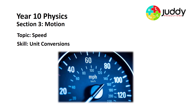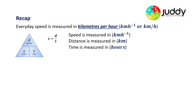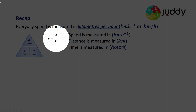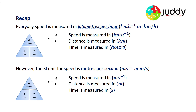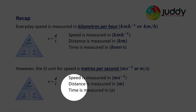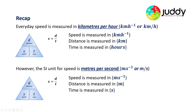Today's video focuses on physics with the unit conversion of speeds. A quick recap — most students should be used to the triangle approach, which identifies that speed equals distance over time. Traditionally, everyday usage has speed measured in kilometres per hour, with distance in kilometres and time in hours. However, the International Standard SI unit for speed, used in the majority of physics equations, is metres per second, where distance is in metres and time is in seconds. Today's video looks at how we convert between kilometres per hour and metres per second.